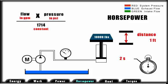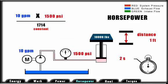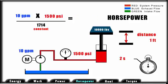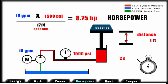In this illustration, a 10 gallon per minute pump is required to extend the cylinder in 2 seconds. The pressure requirement to lift the 10,000 pounds is 1,500 psi, based on cylinder diameter. Based on our formula, our theoretical horsepower requirement would be 8.75.